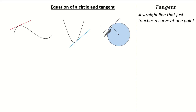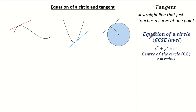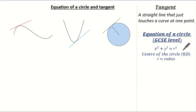At GCSE it's important to note the general equation of a circle. The equation we use is x squared plus y squared equals r squared, where the centre of the circle is always the origin and the radius is labelled as r. In summary, x squared plus y squared is always equal to the radius squared.